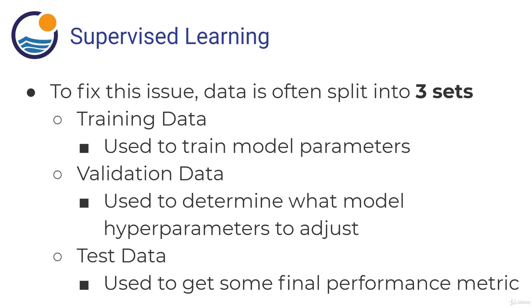You repeat that process over and over again until you're satisfied with your model's performance on the validation data. Then it comes time to evaluate the true performance of your model — that's why we have that third split of test data that the model has never seen before. You use that final test dataset to get a final performance metric. The key thing to note is that once you run the model through the test data, that performance metric is what you expect your model to actually perform with in the real world, since you're not going to go back and adjust your model's weights or parameters.